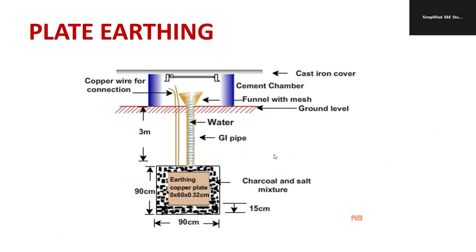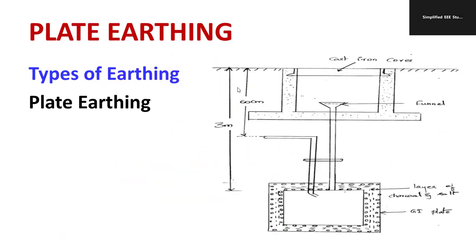This structure you are supposed to draw in the examination. If you are not comfortable with the previous diagram, you can go for this particular figure. You can see the cast iron cover, then there is a funnel where you can pour the water, and the depth of this earth plate from the upper level of the ground is almost 3 meters. Below you are going to install the layer of charcoal and salt, and the GI pipe is already placed.